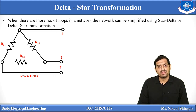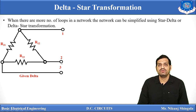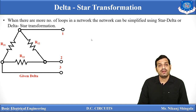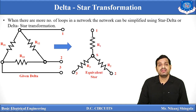There are three terminals: 1, 2, and 3. The resistance between terminal 1 and 2 is denoted by R12, that between 2 and 3 is denoted by R23, and between 3 and 1 it is denoted by R31. This delta network can be converted into the equivalent star.